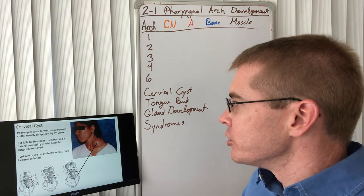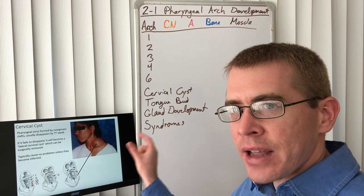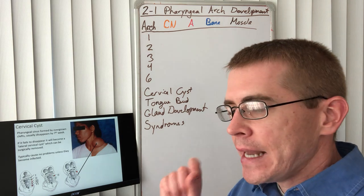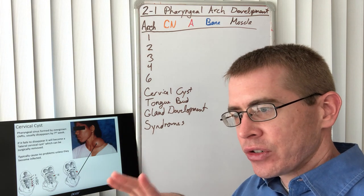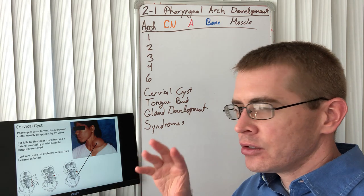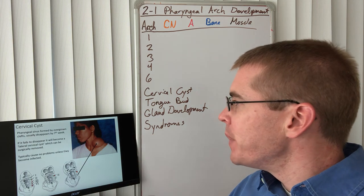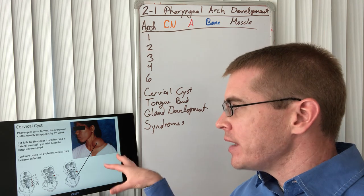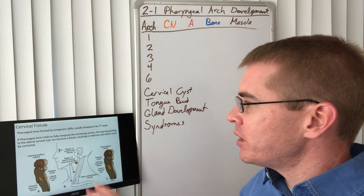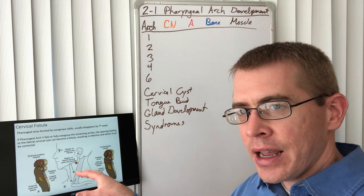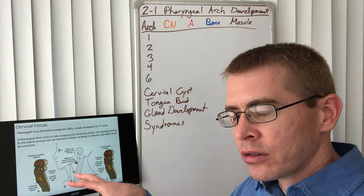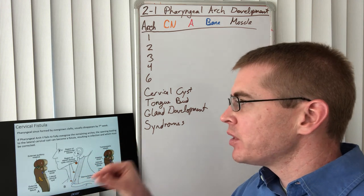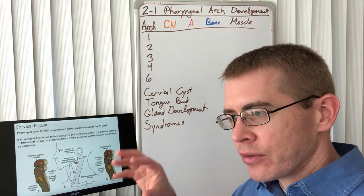Now let's talk about these cervical cysts, lateral cervical cysts that form from the pharyngeal sinus. Typically not an issue and can easily be surgically removed, even in toddlerhood or infanthood. But they don't usually become a problem, even if they become enlarged from edema, unless there's an infection. And infections aren't common unless there's a fistula that connects the sinus to the internal or external environment.